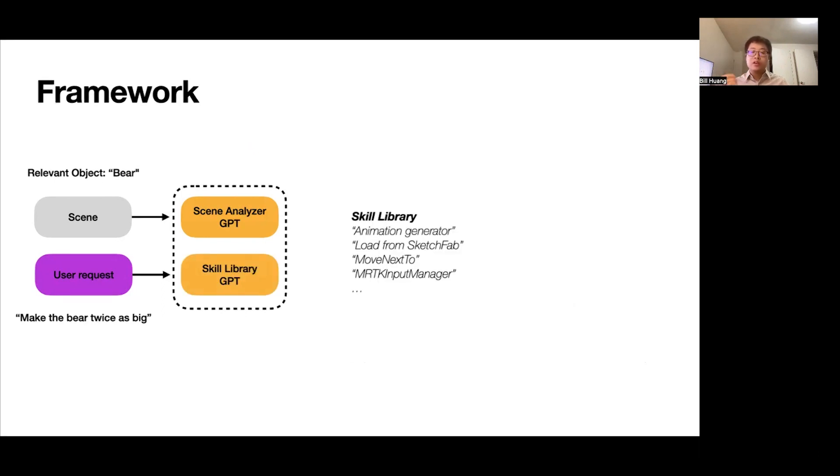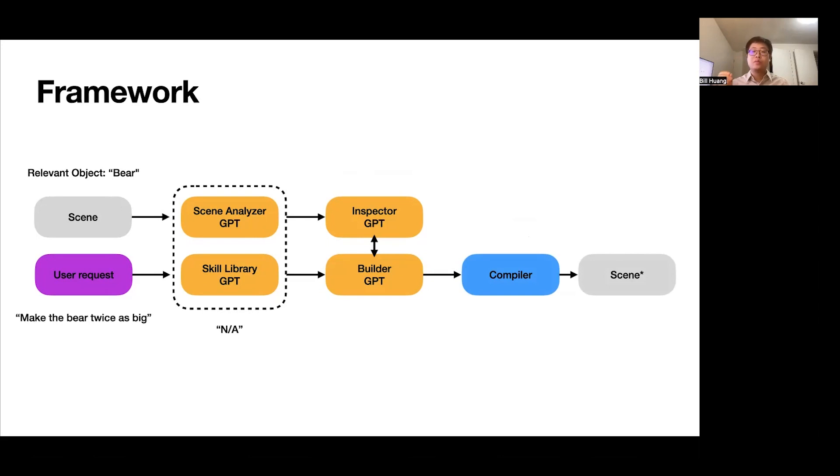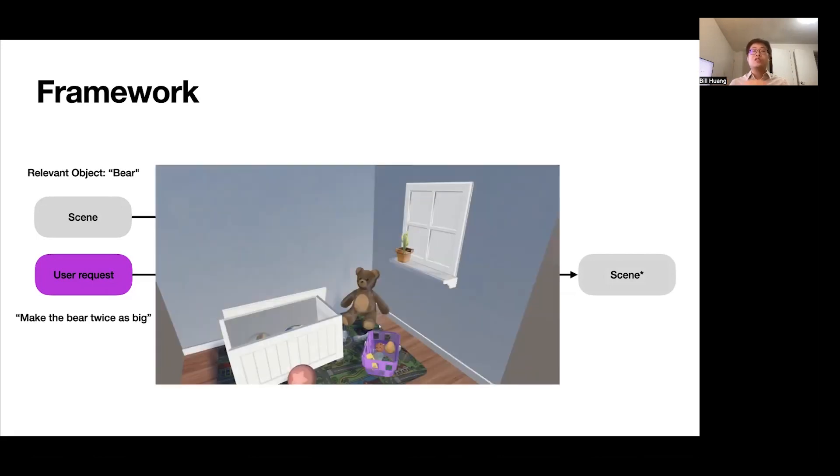We'll also query another GPT called the skill library, which is more used for specialized purposes. We'll explain later. It is not needed here because our request is fairly generic. We'll then pass the output of the scene analyzer to a builder GPT, which is another GPT. The responsibility for him is to generate code that is supposed to carry out the request in the virtual scene. Before we actually execute his generated code, however, we first will pass it to an external inspector GPT, and the inspector will check this code for any potential errors. In this case, it will find an error, and then it will relay the suggestion back to the builder as to how to fix this error. The builder will then try again and then relay the modified code back to the inspector. The inspector will now see that the error has been fixed, and then this code is now passed to a compiler, which will then compile and execute this code at runtime. And then we'll see that the scene will actually go through the desired change. The teddy bear is twice as big.